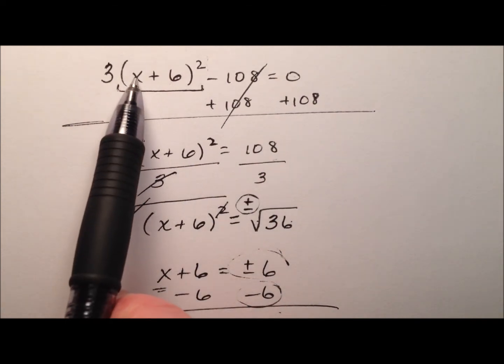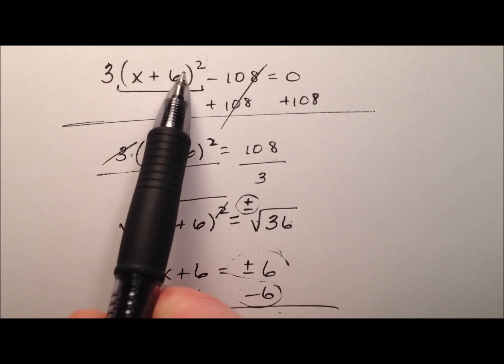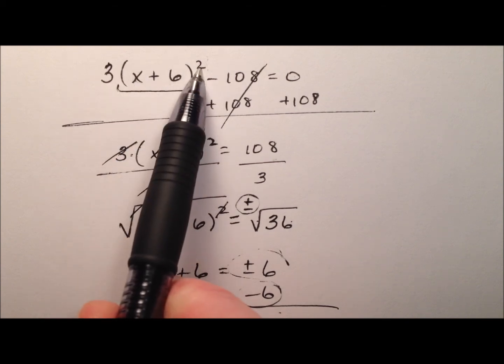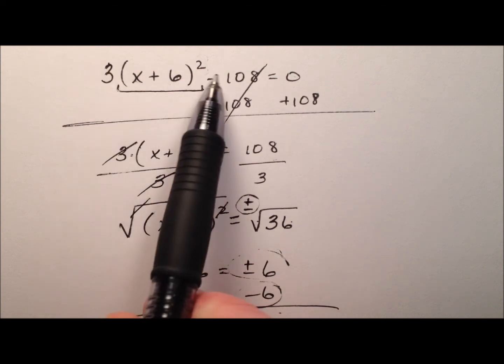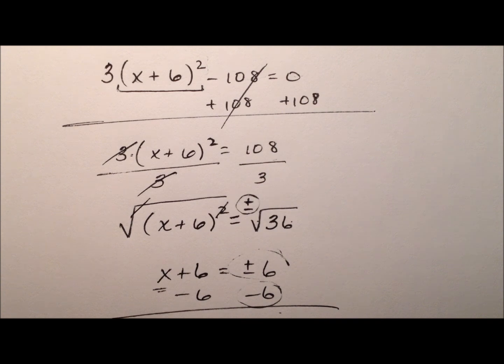When we try the negative 12, negative 12 plus 6, that'll be a negative 6. But when I square it, it will come out to be a positive 36 times the 3 is 108 again. Minus 108 is that 0.